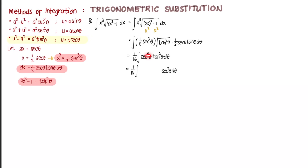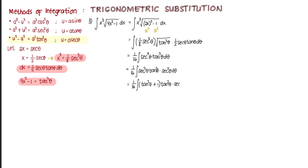Subtracting 2 from the exponent 4, what remains is secant squared theta times tangent squared theta. We factor out secant squared theta and express the remaining trig functions in terms of tangent. Using the trig identity secant squared theta equals tangent squared theta plus 1, we get: one sixteenth times the integral of (tangent squared theta plus 1) times tangent squared theta times secant squared theta d theta. Distributing gives tangent to the power of 4 theta plus tangent squared theta, all times secant squared theta d theta.